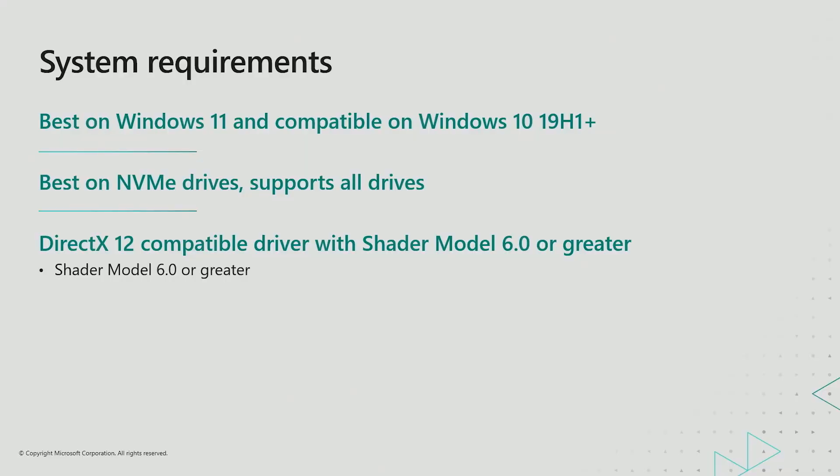On Windows 10, Direct Storage will fall back to use an optimized file I/O layer built on top of the Win32 APIs. This fallback layer leverages good patterns like async I/O and completion ports, and it will work very hard to give you the most throughput on Windows 10. You will also need a DirectX capable GPU that supports shader model 6.0 or greater. The primary goal of Direct Storage is to choose the best, most performant way to achieve your loading demands based on the platform you're running on — titles do not need to be concerned about whether they're running on Windows 10 or Windows 11.